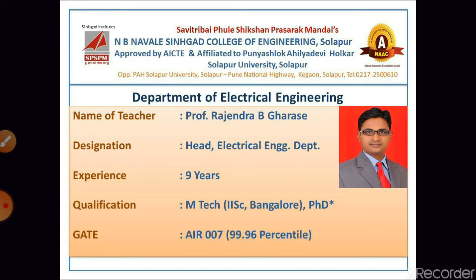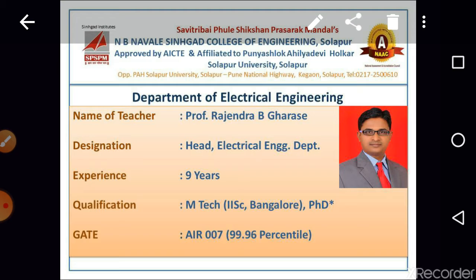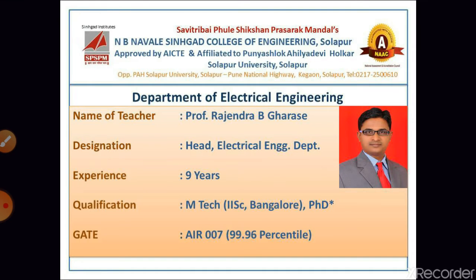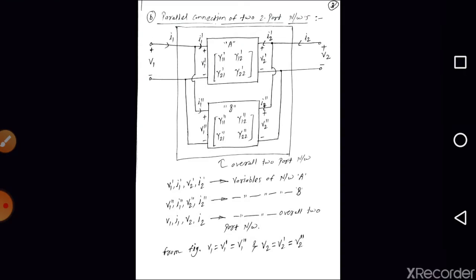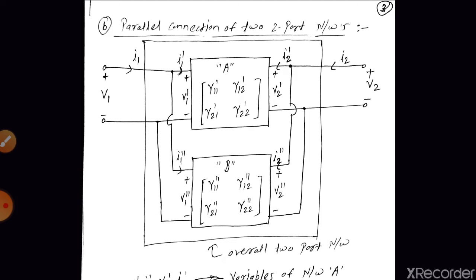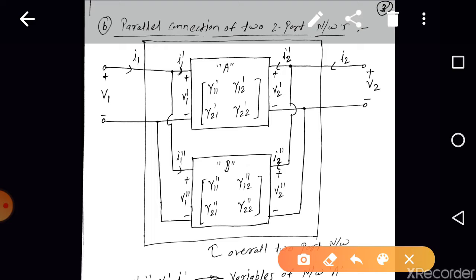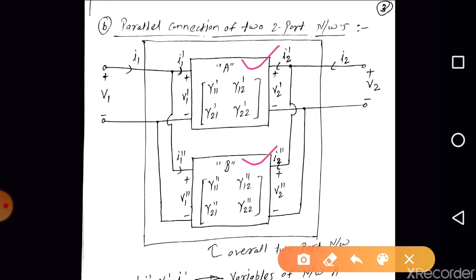In my last video we discussed about the series connection of two or more two-port networks. Today we are going to discuss about the parallel connection of two or more two-port networks. As we know, when elements are connected in parallel the current gets divided but the voltage across each element remains the same. So here instead of elements we will be having networks — Network A and Network B — and we need to connect these two in parallel.